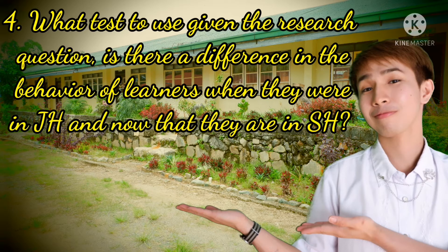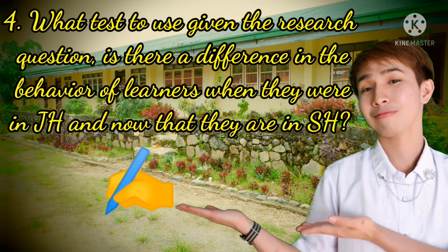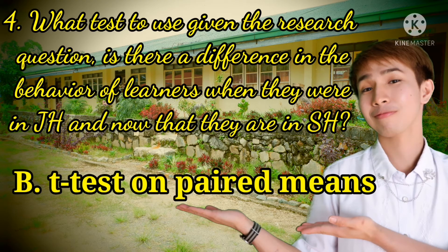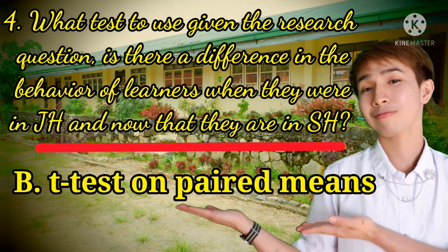Number four: Is there a difference in the behavior of learners when they were in junior high school and now that they're in senior high school? Did you draw B? Of course — it's t-test on paired means, because we're comparing the behavior of the same learners at two different points in time.